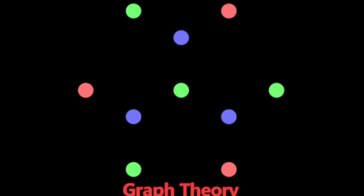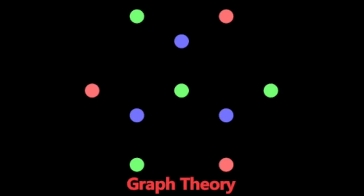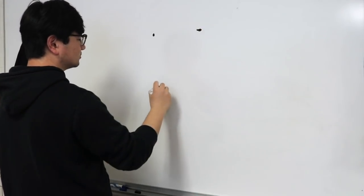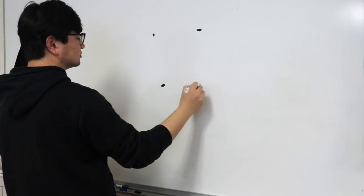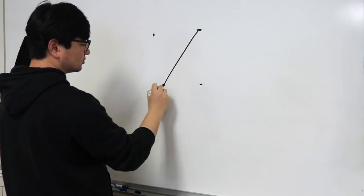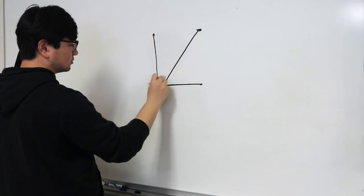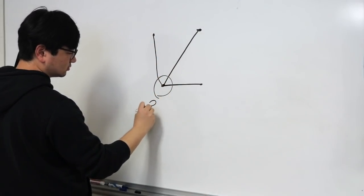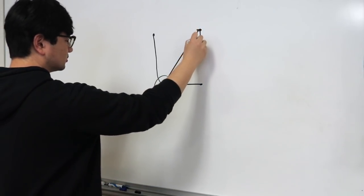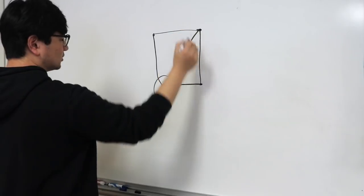So what are these graphs that he was talking about? In simplest terms, these graphs are a bunch of dots that we will call vertices, connected by lines that we will call edges. The number of edges that come out of each vertex is what we will call the degree of that vertex. So for example, if it has three lines or edges coming out of it, we say that it has degree three.